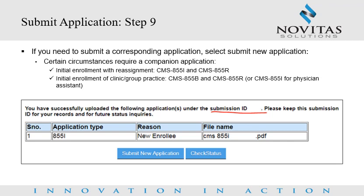Submit Application Step 9: If you need to submit a corresponding application, select Submit New Application. There are certain circumstances that require a companion application. For example, an individual initial enrollment with reassignment scenario requires both the CMS 855I and CMS 855R. An initial enrollment of a clinic group practice requires the CMS 855B, CMS 855I, and CMS 855R, or CMS 855I for Physician Assistants.